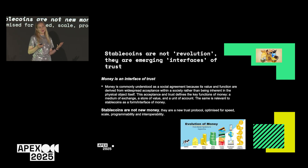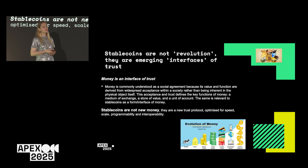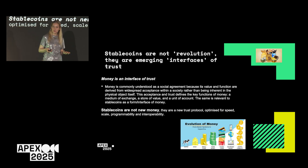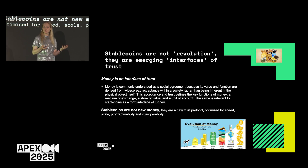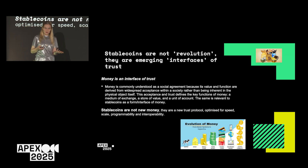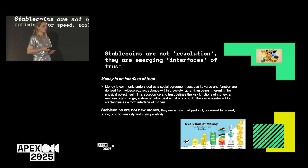To finish with a more historical lens: going back into the history of money, money is built on trust. Money can be defined as a social agreement that a particular form — physical or digital — will be accepted and adopted by society. In that sense, stablecoin is not a new form of money; it's a new trust protocol that uses algorithms and technology optimized for speed, programmability, and interoperability — the features that are needed now for this moment in time.